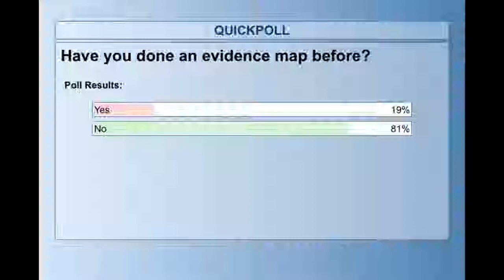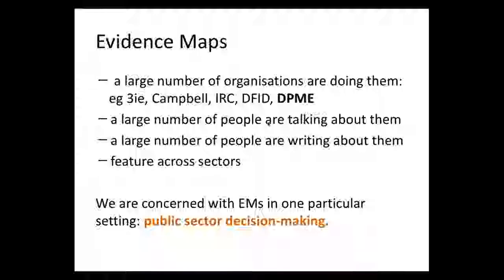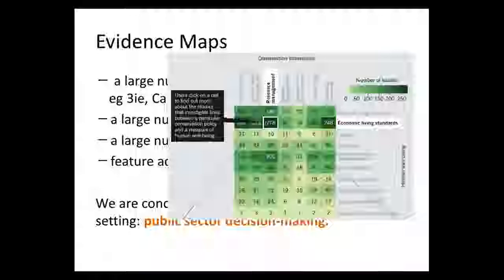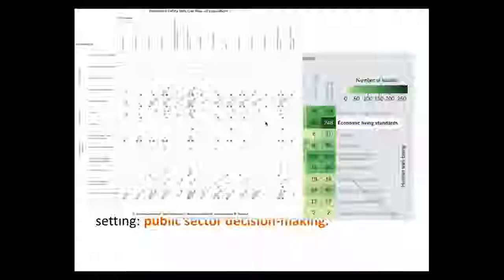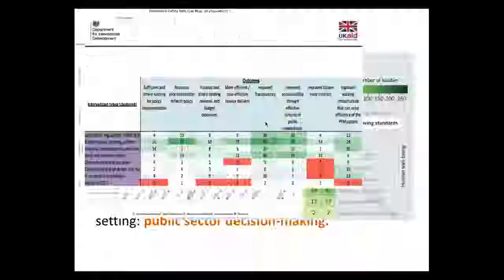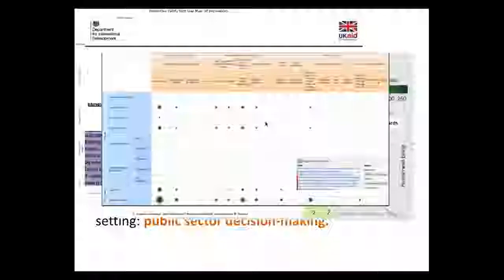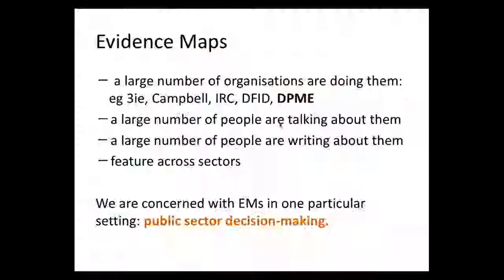Evidence maps really are the new kid on the block when it comes to systematic review and evidence synthesis methodology. There are quite a few organisations currently doing them, ranging from the International Initiative for Impact Evaluation, to Campbell, to the International Rescue Committee, DFID, DPME, and many others. Because of this plethora of organisations, evidence maps take a lot of different forms. There can be a heat map approach, an intervention-to-outcome mapping using bubbles to visualise the size of evidence, an Excel spreadsheet, or dedicated software like DPME is using. So there's quite a diversity of approaches to visualise evidence maps.